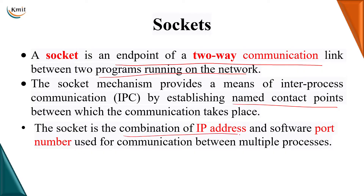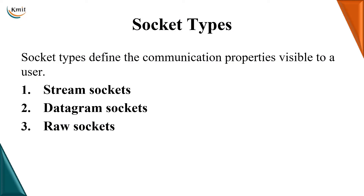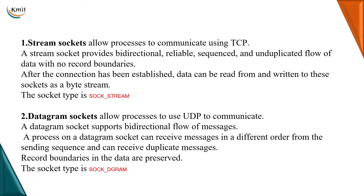This mechanism provides IPC, that is inter-process communication, by establishing named contact points, which are basically a combination of the IP address and the software port numbers. Now let us see what are the different types of sockets. We have stream sockets, datagram sockets, and raw sockets. Stream sockets allow processes to communicate using the TCP protocol.